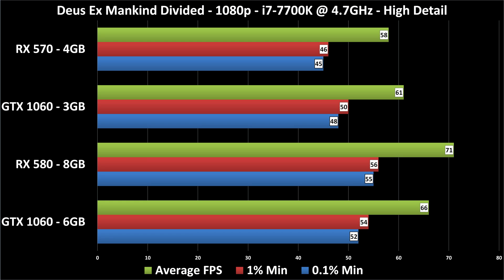Let me talk about the 1% and 0.1% numbers. Short version: the 1% minimums mean that 1% of the time the frame rate is below that number, and 99% of the time it's above it. Think of it as a better minimum. The problem with straight minimums is that one frame in an entire run touching a low number is not reflective of performance. The 1% red bars are the ones to look at — 99% of the time your frame rate will be at or better than the red bar. The 0.1% means 99.9% of the time. The reason numbers are close here is because these are such short runs.